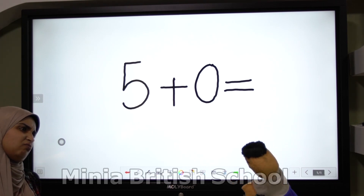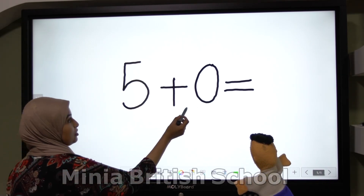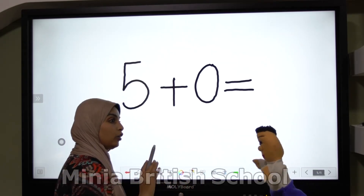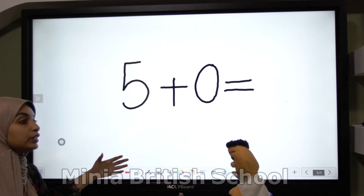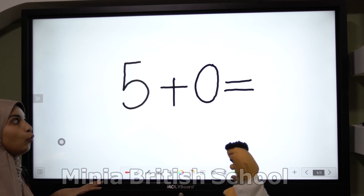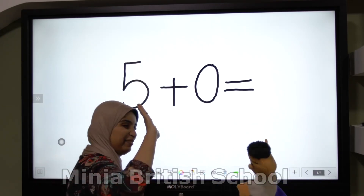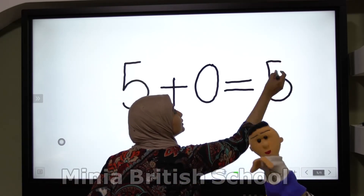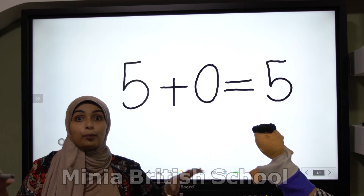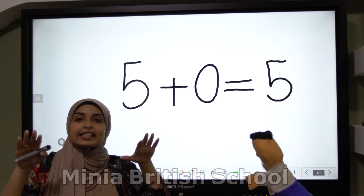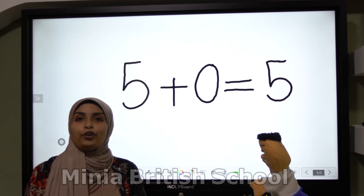Okay, Tom, do you understand? Let's read our equation: five plus zero equal. Any number put with zero — put the same number. Five or zero? Five. Excellent! Give me five. So, Keiji, any number that comes with zero — put the same number. The same number.